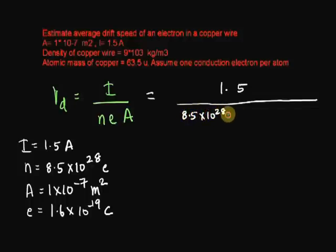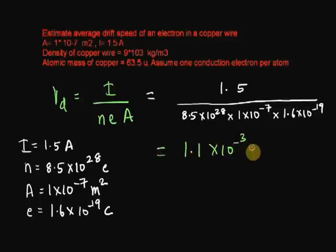So drift velocity equals I divided by N into A, into the charge of an electron. If you simplify all of this, you get 1.1 into 10 to the power minus 3 meter per second, or 1.1 millimeter per second.